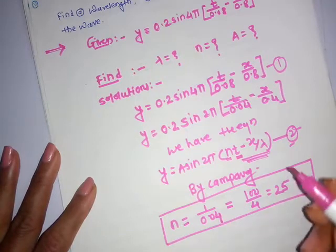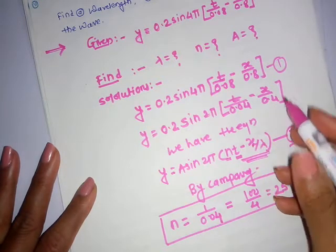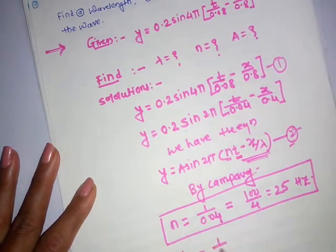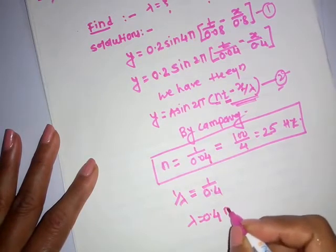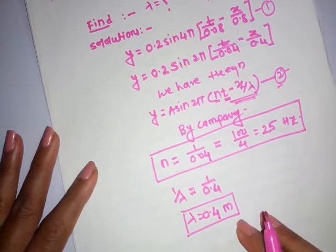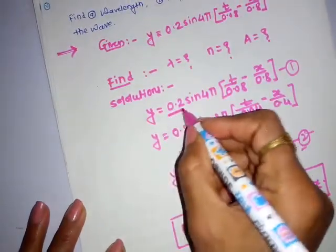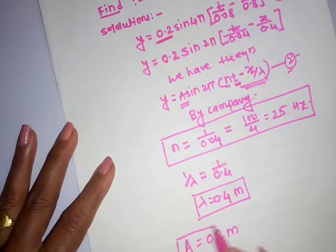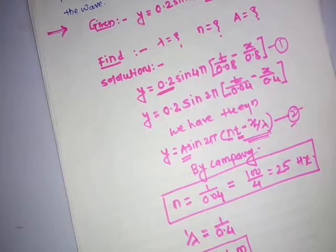For wavelength: 1/λ is the coefficient of x, so 1/λ = 1/0.4, therefore λ = 0.4 meters. For amplitude: comparing with the standard equation, a = 0.2 meters. In this way, we calculated the values of frequency as 25 Hz, wavelength as 0.4 m, and amplitude as 0.2 m.